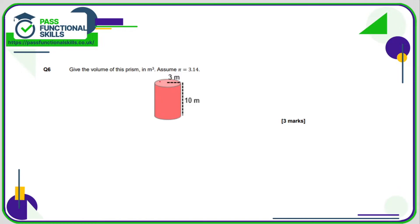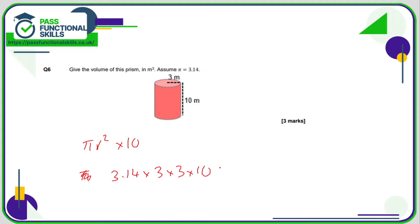Number 6 — again, the volume of a prism is the area of its face multiplied by its depth. Here we've got a circular face, so the formula is pi r squared. It's going to be pi r squared times 10. We're told to use 3.14, the radius is 3, so that's 3.14 times 3 times 3 times 10, and that comes to a total of 282.6 cubic meters.